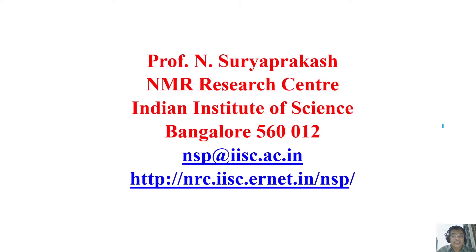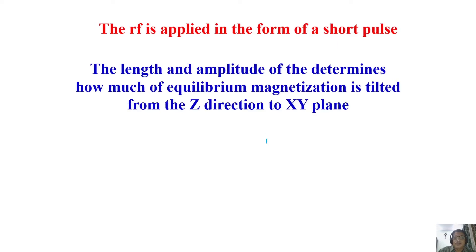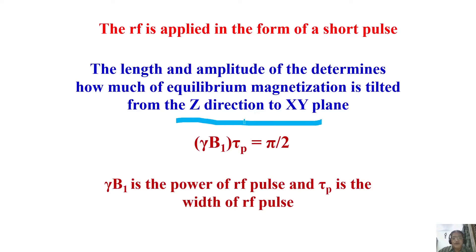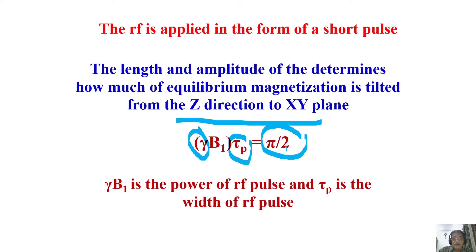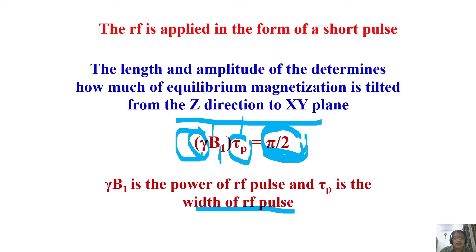You can manipulate the amount of magnetization tilted in different directions by applying radio frequency pulses in different directions. The pulse is applied as a short RF burst, and you can adjust RF power and pulse width to get the desired flip angle. Gamma B1 gives the pulse power. Knowing gamma, pulse width, and pi by 2, you can play with RF power and pulse duration to tilt the magnetization by any desired amount.